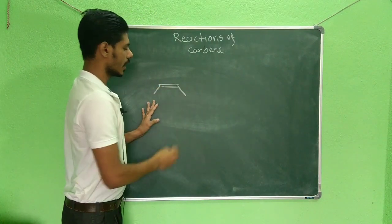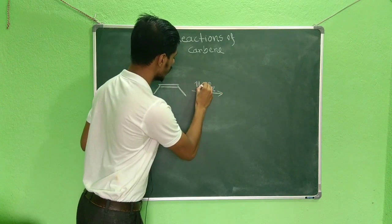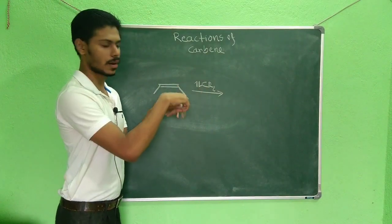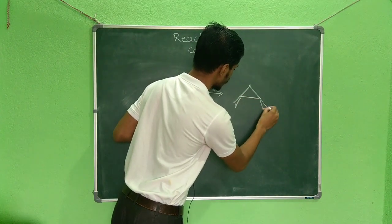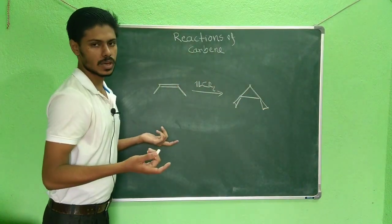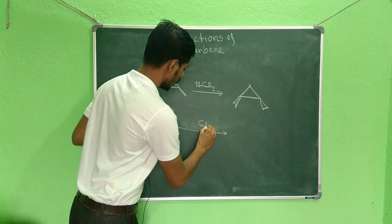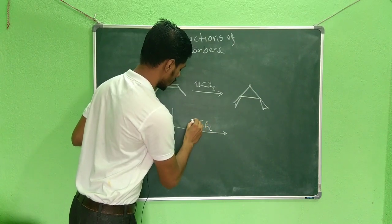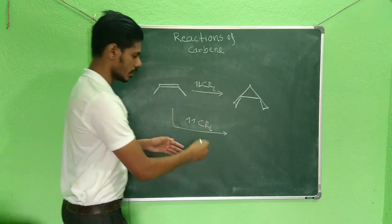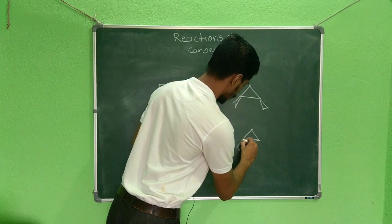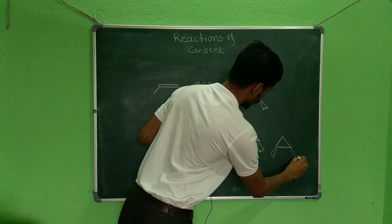If you have a cis alkene and treat it with a singlet carbene — spin-paired — you will get a stereospecific reaction: cis from cis. If you used a trans alkene instead, you would get a trans product. But if you do the same reaction with a triplet carbene — both spins the same — then you would get a mixture of the two products, one major and one minor.